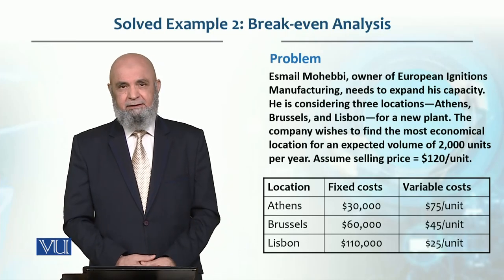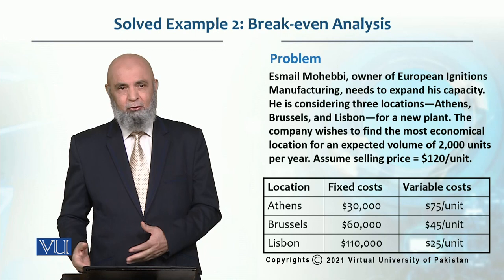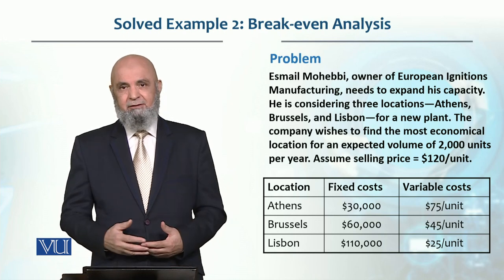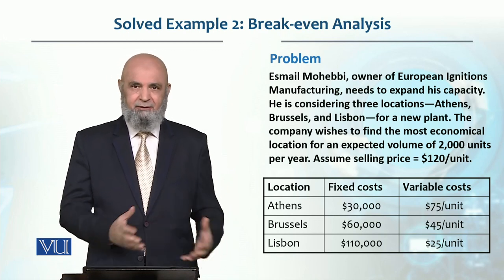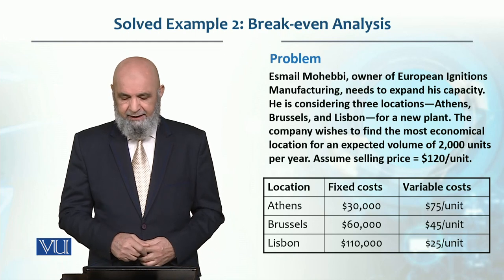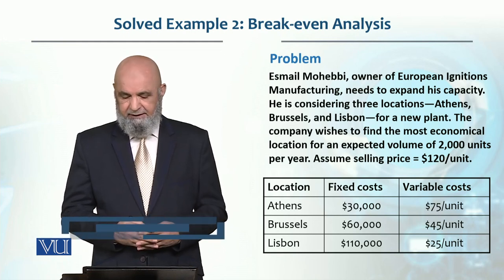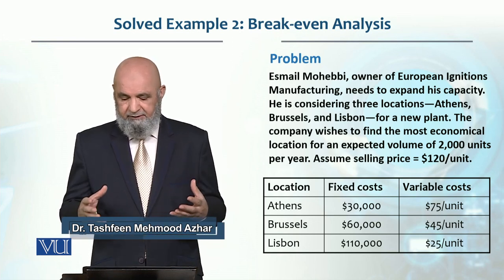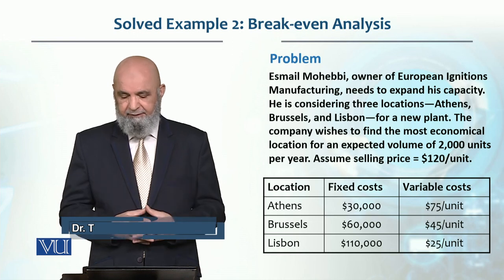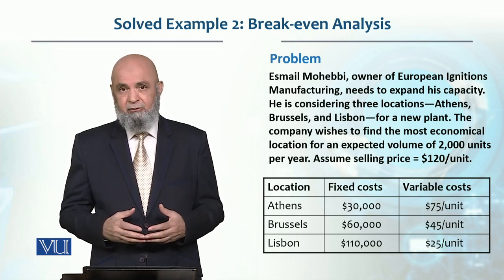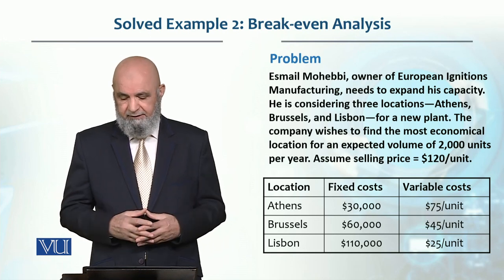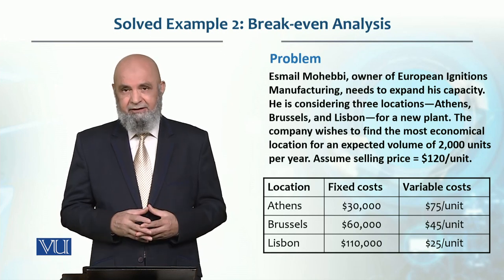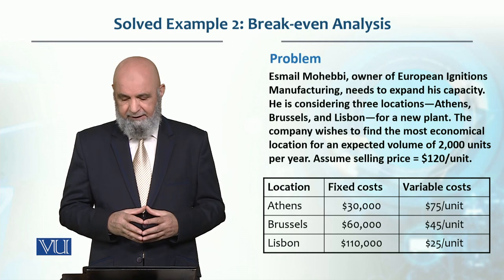Let's look at the second example. In that case, there were only two locations that we had to decide. Now let's look at another example, which is three locations that we have to decide. There is a decision to be made for the European Ignition Manufacturing Company, which would like to expand into one of three countries: Athens, Brussels, and Lisbon.